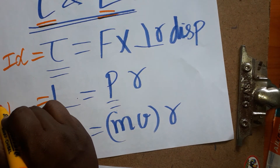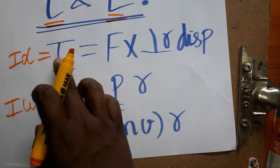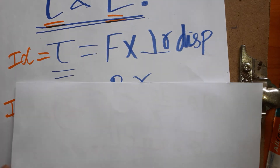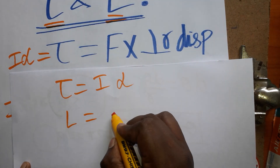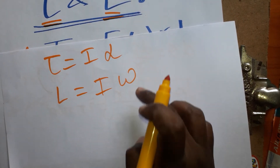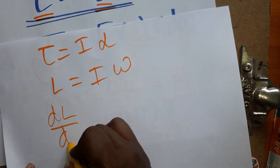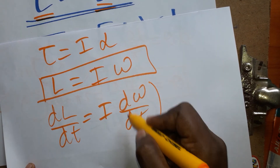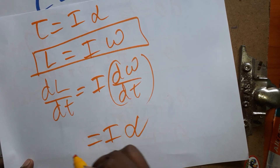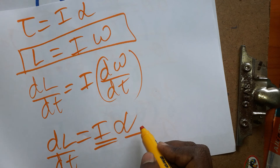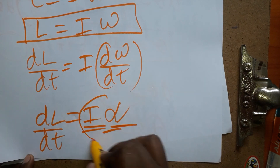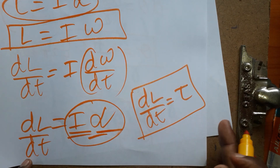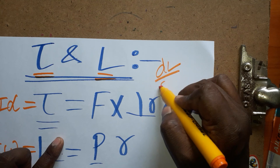So we have two equations: torque equals I alpha, and angular momentum L equals I omega. Differentiating L equals I omega with respect to time gives dL/dt equals I times d omega/dt. Since d omega/dt is angular acceleration alpha, we get dL/dt equals I alpha. But I alpha is torque, so dL/dt equals torque. Therefore, the rate of change of angular momentum equals torque.